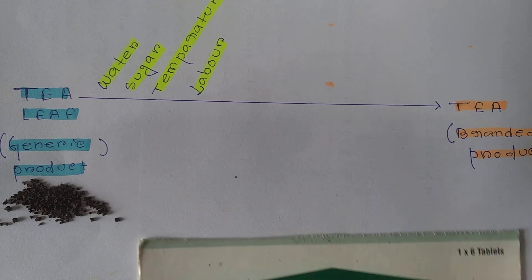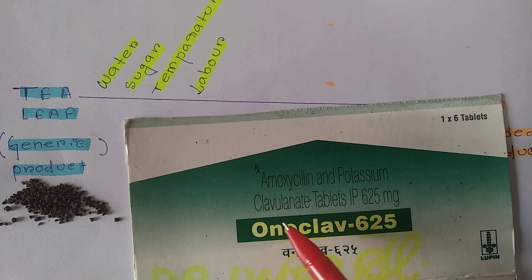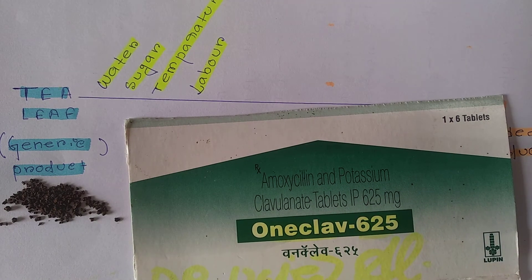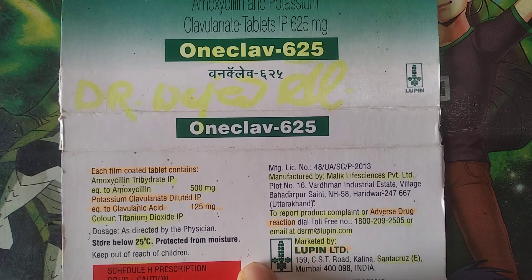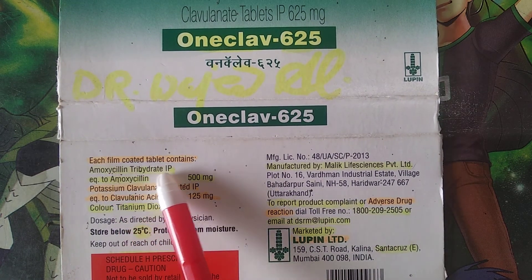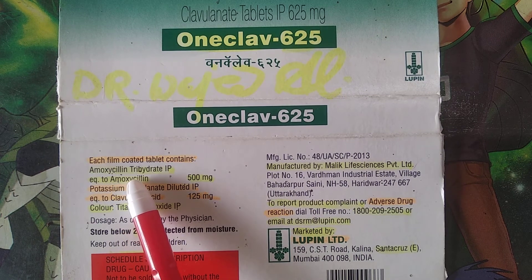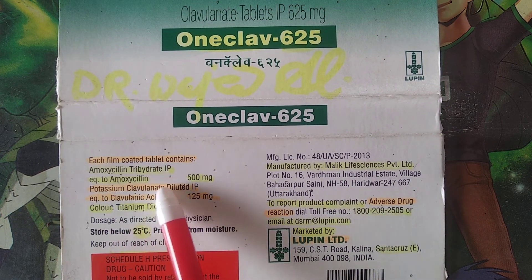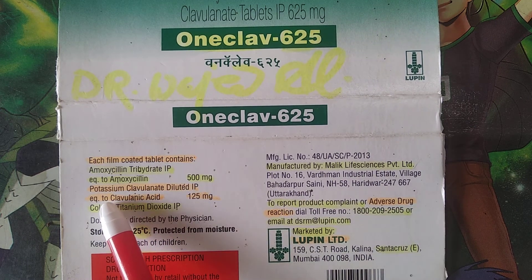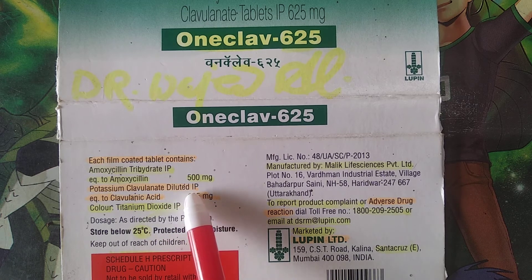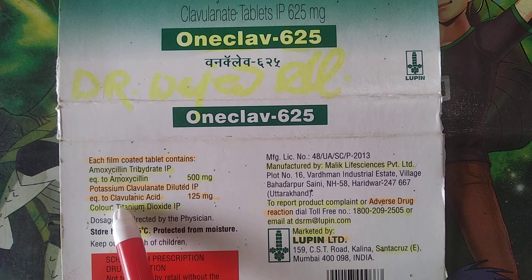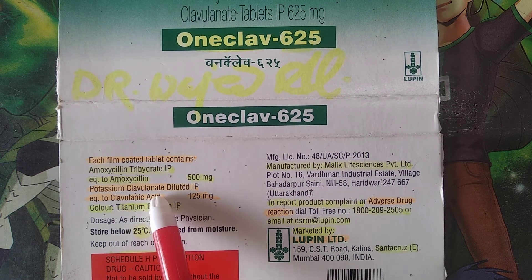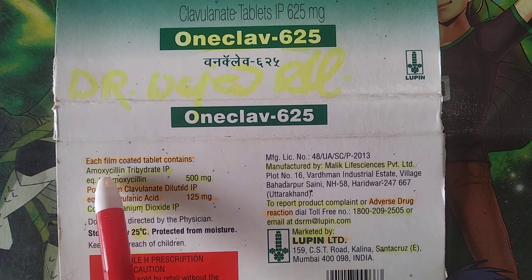One more thing to clarify: One Club contains clavulanate, which is the beta-lactamase inhibitor. Each film-coated tablet contains amoxicillin trihydrate IP equivalent to amoxicillin 500 milligram and potassium clavulanate diluted IP equivalent to clavulanic acid. Amoxicillin is the antibacterial agent that inhibits bacterial growth in our body, and clavulanic acid is the beta-lactamase inhibitor.